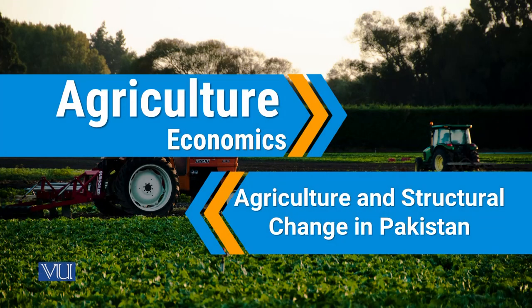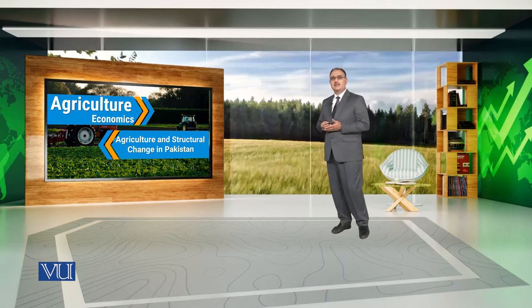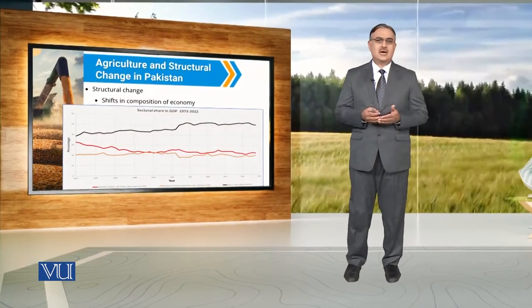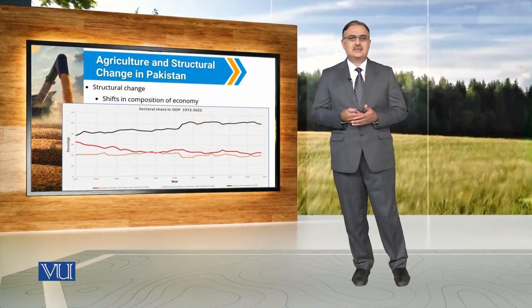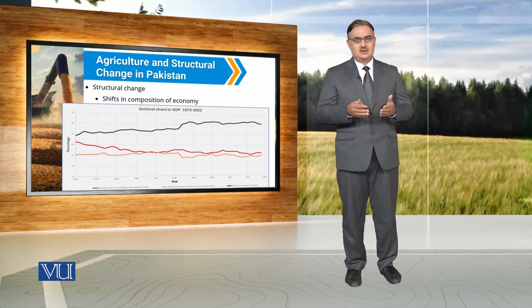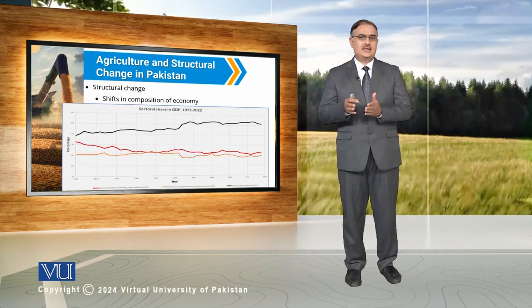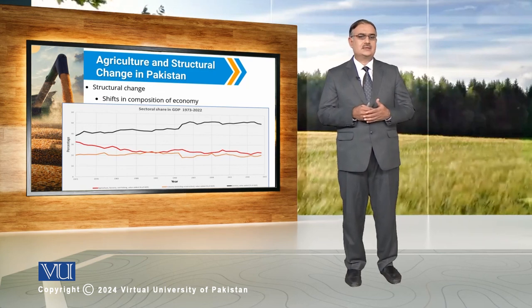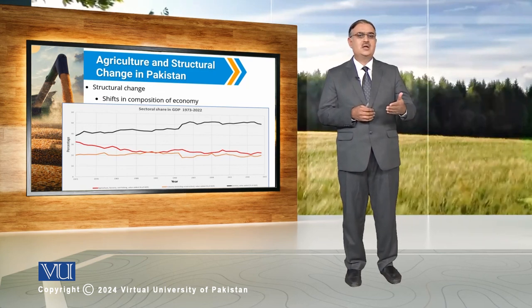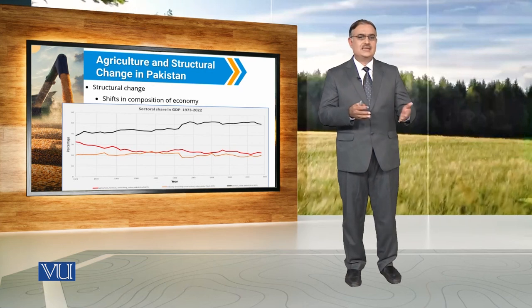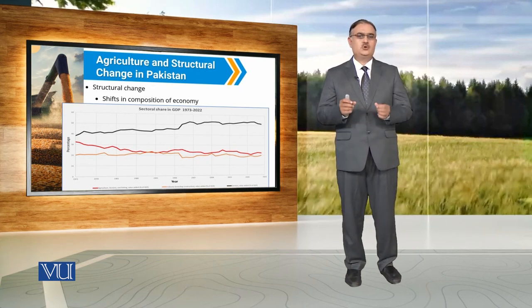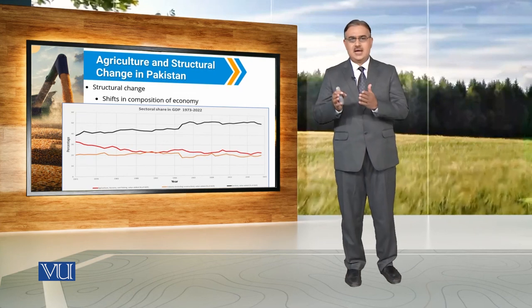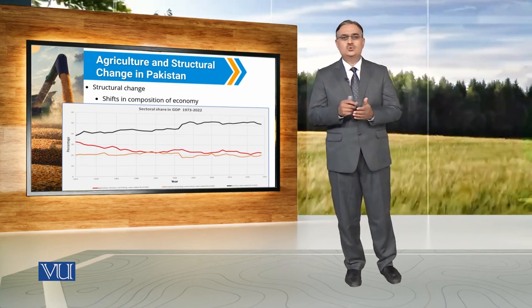Agriculture plays a critical role in the structural change of any economy. If we draw the dataset of Pakistan, we can observe that during the last 50 years, the services sector is contributing more than the other two sectors. The agricultural sector initially contributes relatively more than the industrial sector, but with the passage of time, the contribution of industry and agriculture is very close to each other.